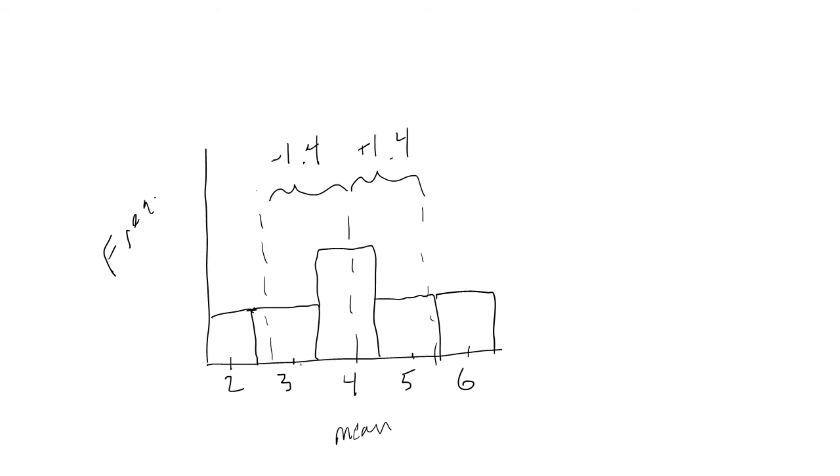So what does our standard deviation actually tell us? This means that roughly, on average, our values deviate by about 1.4 units from the mean.